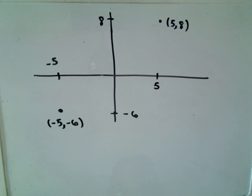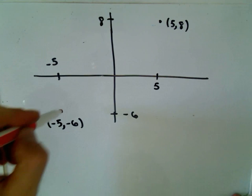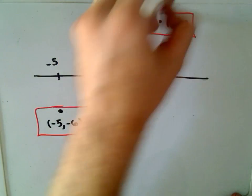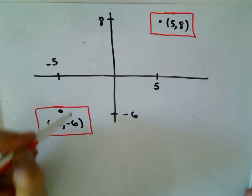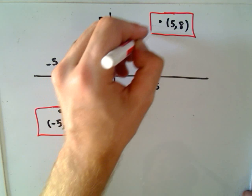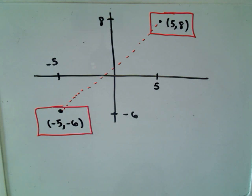So in this example, I'm just going to simply find the midpoint between these two points. I've got the point negative 5 comma negative 6, and then I've got the point 5 comma 8. So let me try to connect those with a line if I can. So not the straightest of lines, but a line nonetheless.